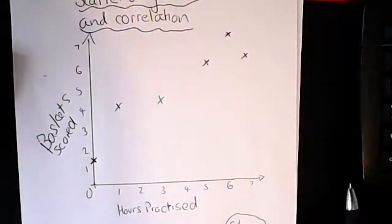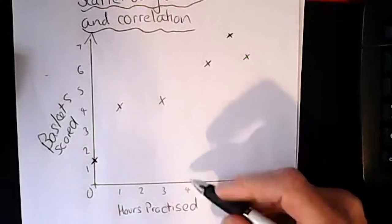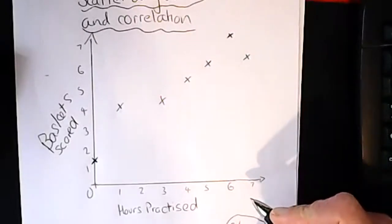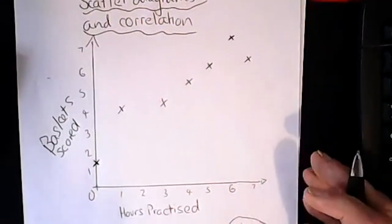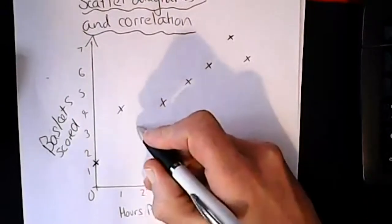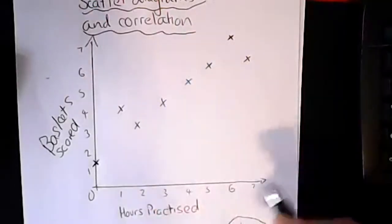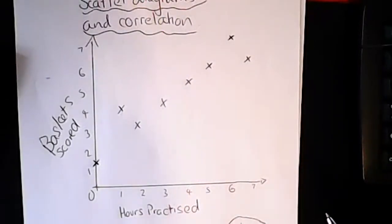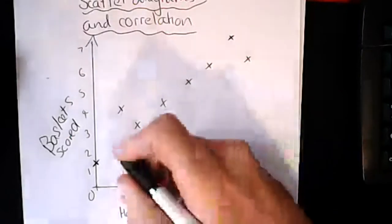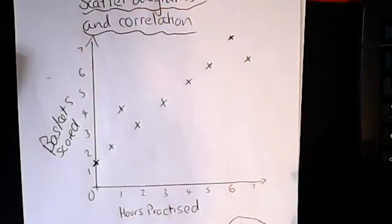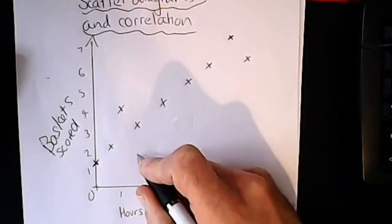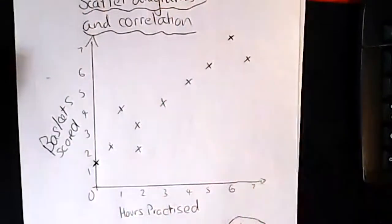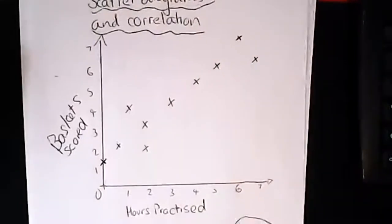Sean Cotter, next player: reasonable player, did four hours but had a few detentions this week and got five baskets. Sarah Blows didn't practice much - two hours - and got three baskets. Robert Jones practiced one hour and just got two baskets. Paul Brentford did two hours practice and got two baskets. So there we have it - one, two, three, four, five, six, seven, eight, nine, ten - ten players.